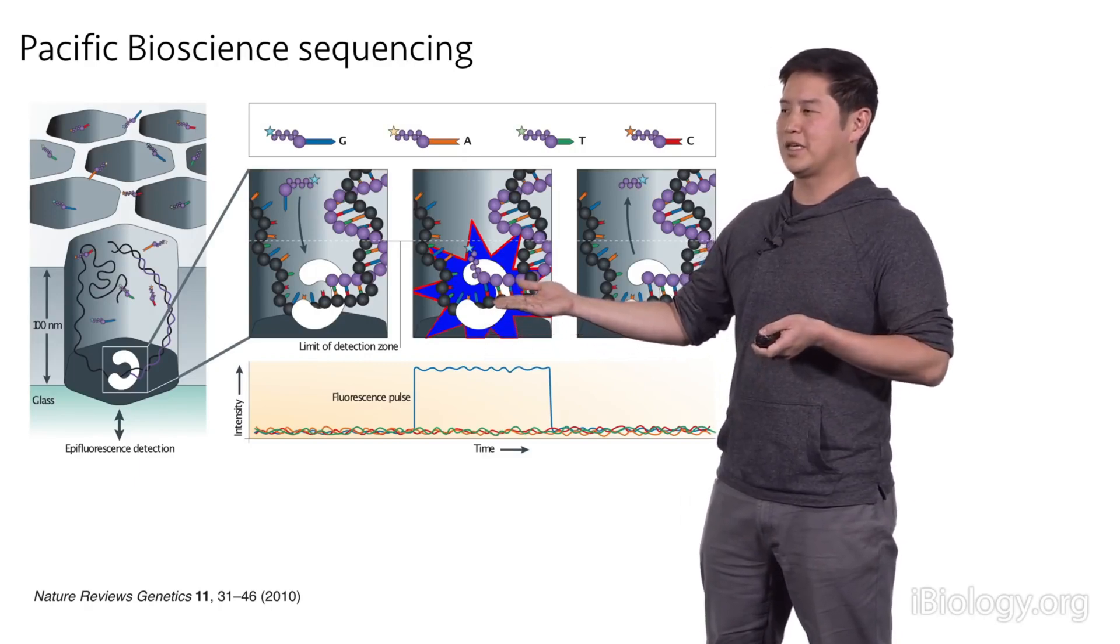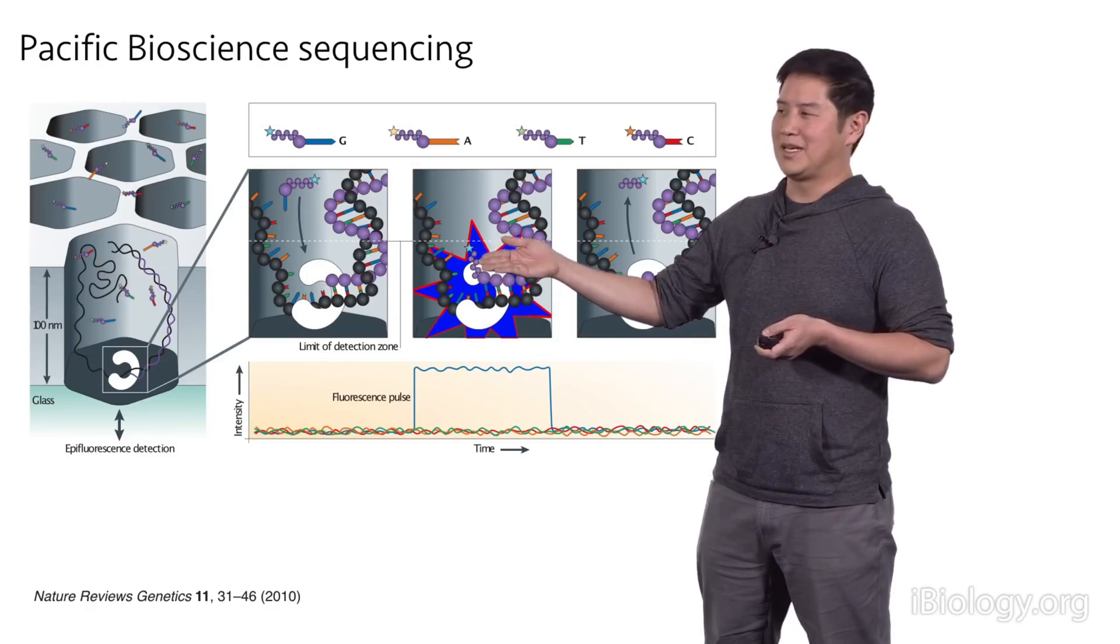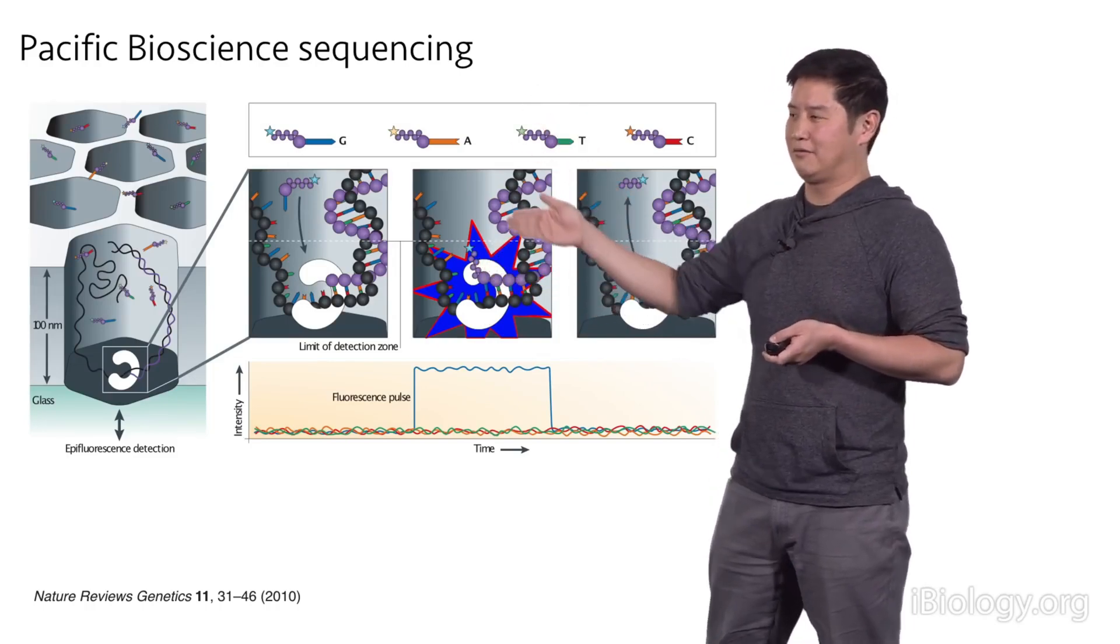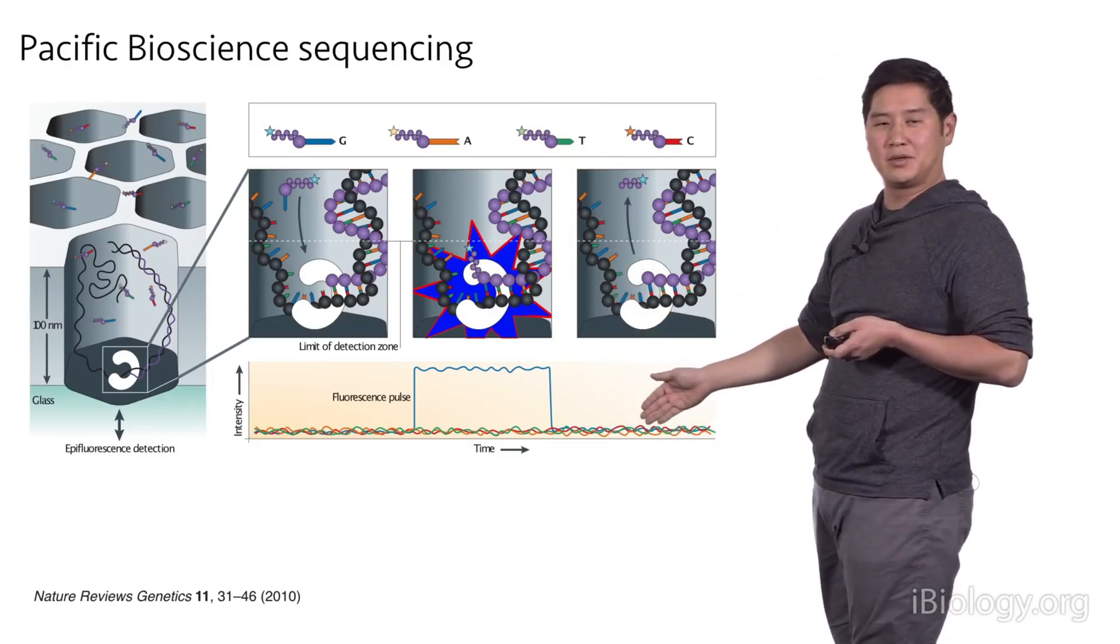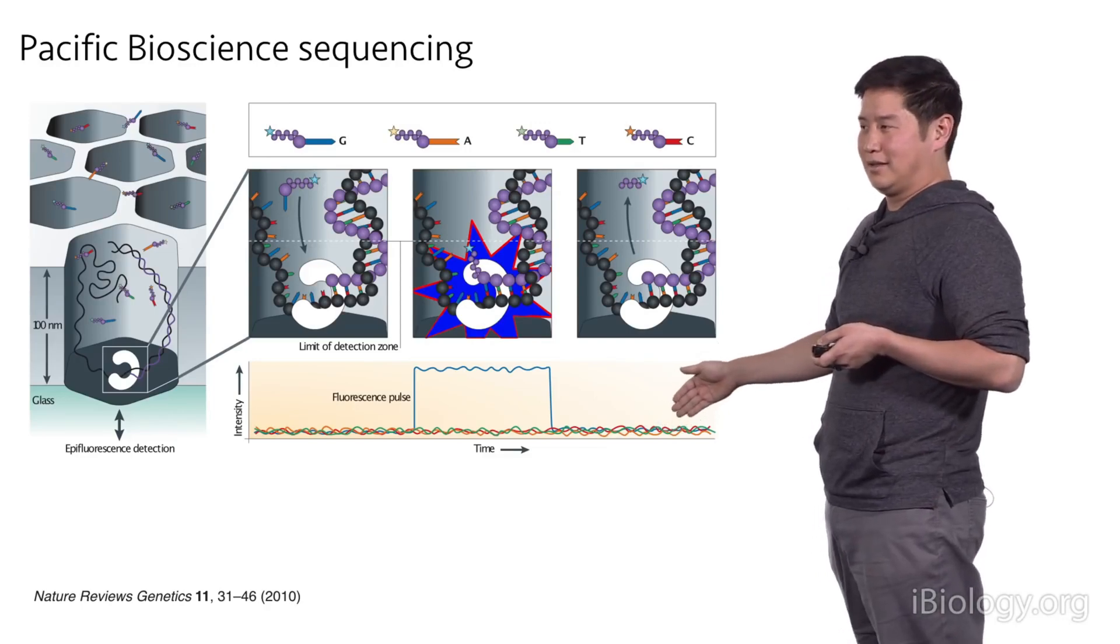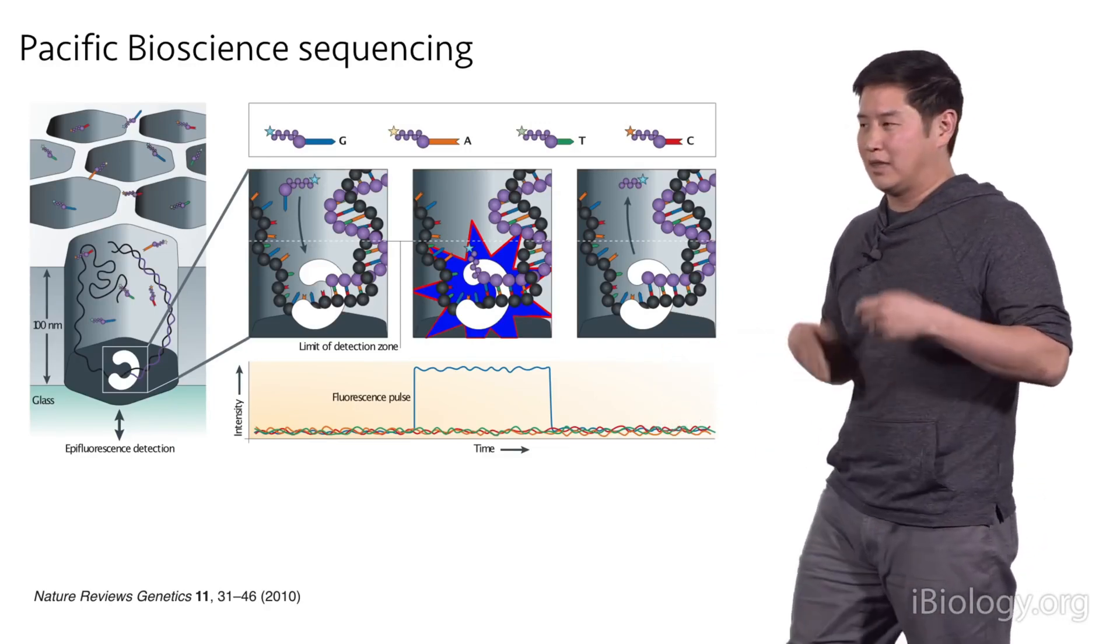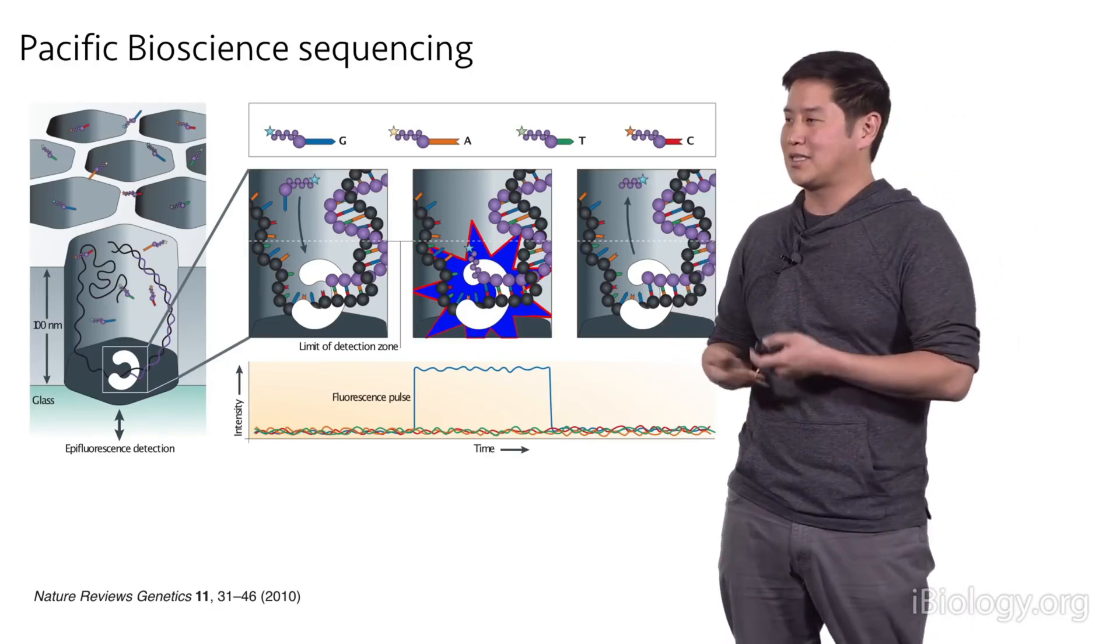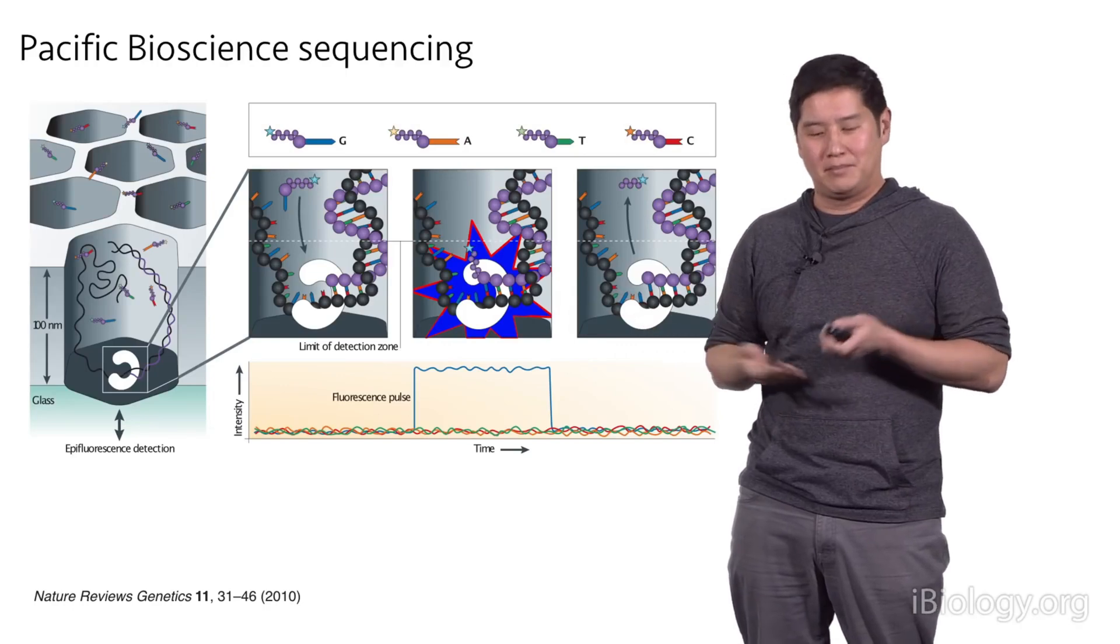And so once the incorporation occurs, the phosphates leave and the fluorescent group that's attached to the phosphates also leaves, resulting in the signal dropping back down to this background level. And this will continue until the next base that's correct binds and you'll see another spike. And so by looking at these spikes and signals across anywhere from 1 to 8 million wells at a time, we can build up DNA sequences.